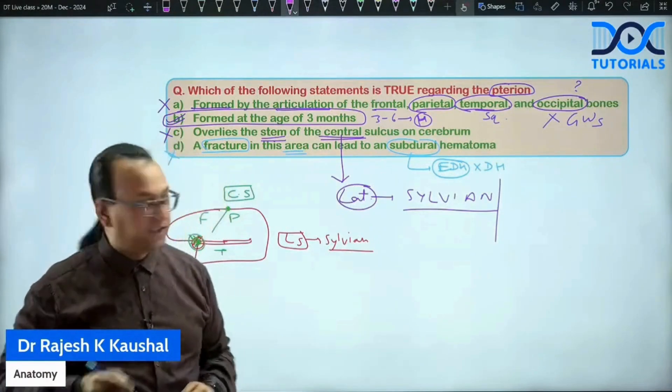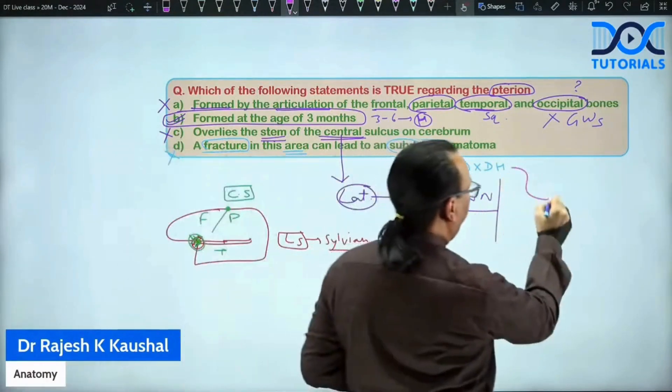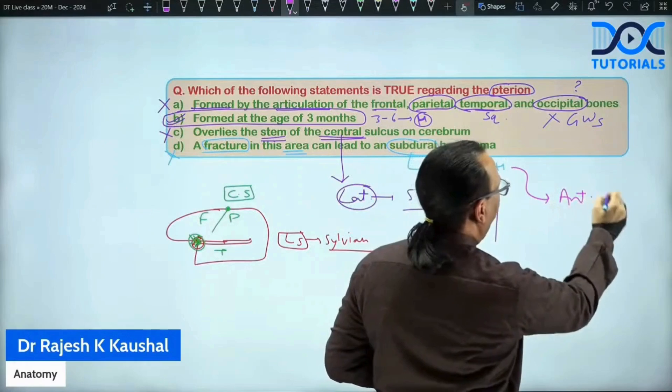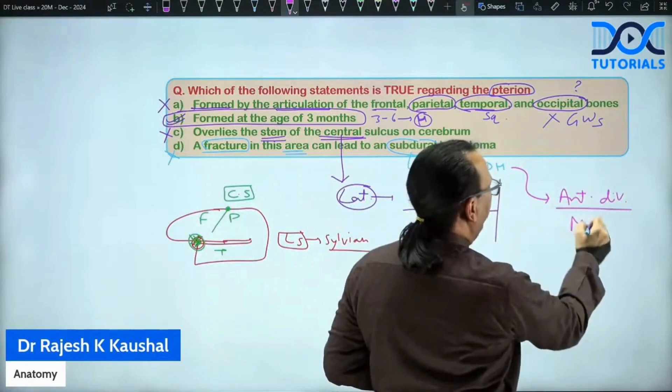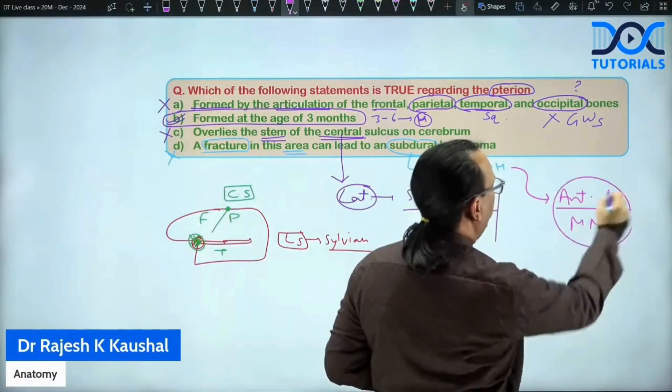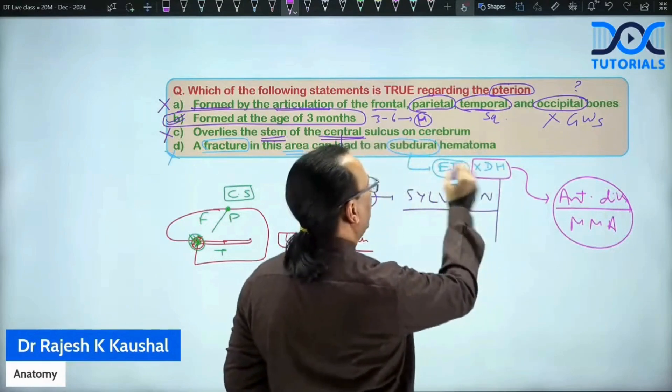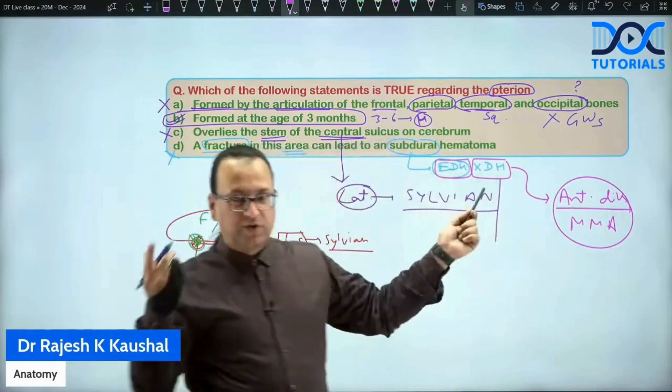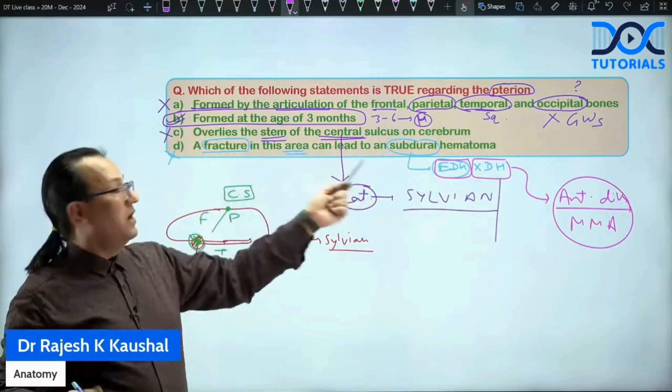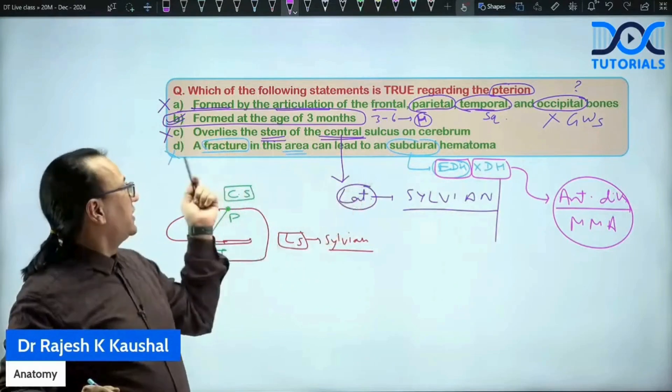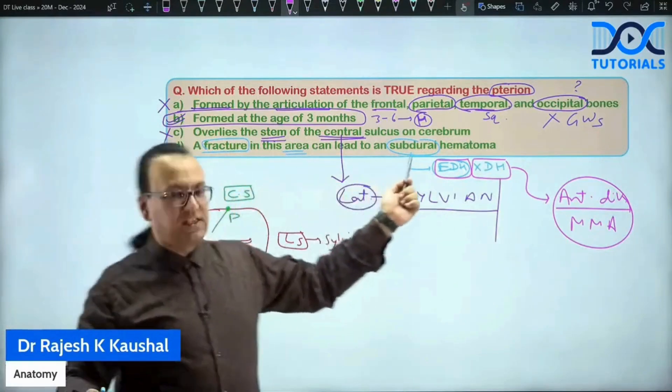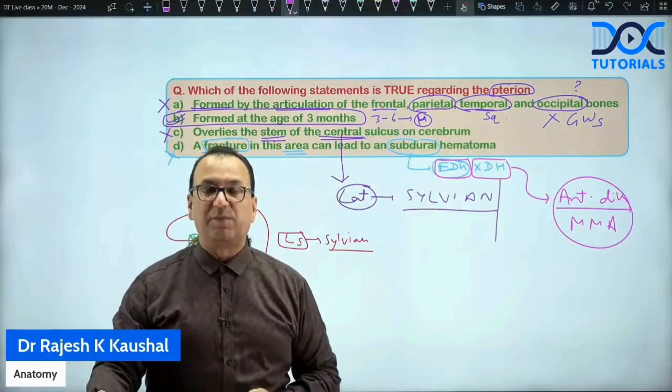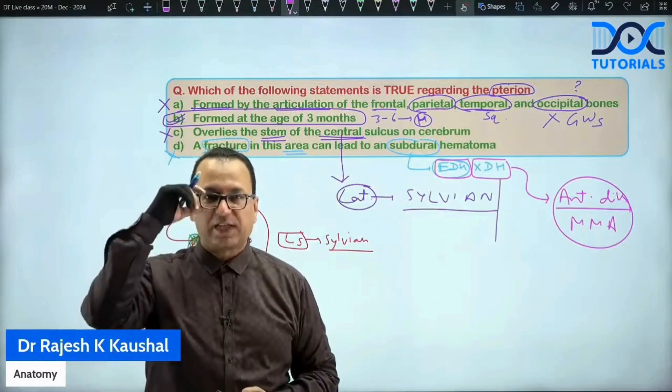So, what you get here is epidural hematoma or what is called as extradural hematoma, not the subdural. There will be one artery running deep. That is anterior division of middle meningeal artery. Whatever I am telling, they are all MCQs and they have high chance of appearing again. Anterior division of middle meningeal artery. That will bleed to give extradural hematoma. And that will be under pterion.